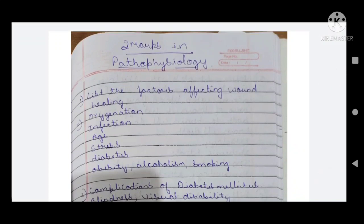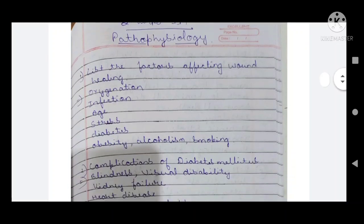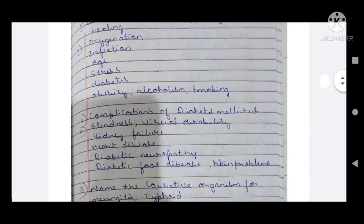The first question: list the factors affecting wound healing. You have to list the factors like oxygenation, infection, age, stress, diabetes, obesity, and alcoholism. These are all the factors which affect the wound healing process.